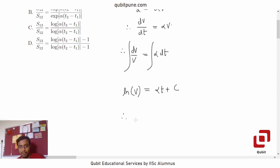Or v equal to e to the power alpha t plus c. Let us take e raised to c as a. So that is now an arbitrary constant a into e raised to alpha t.